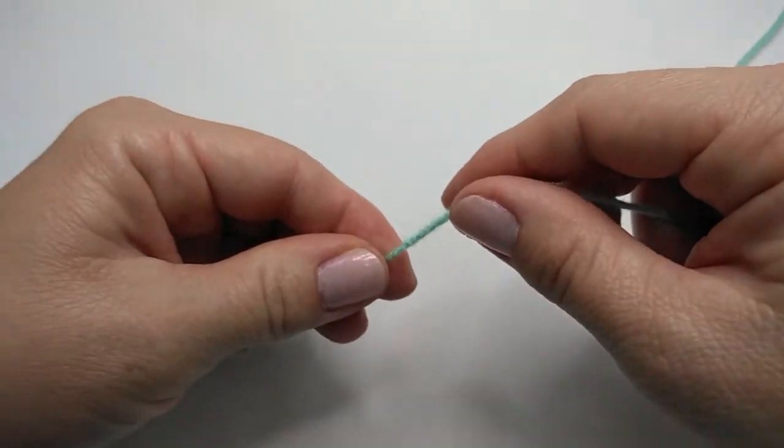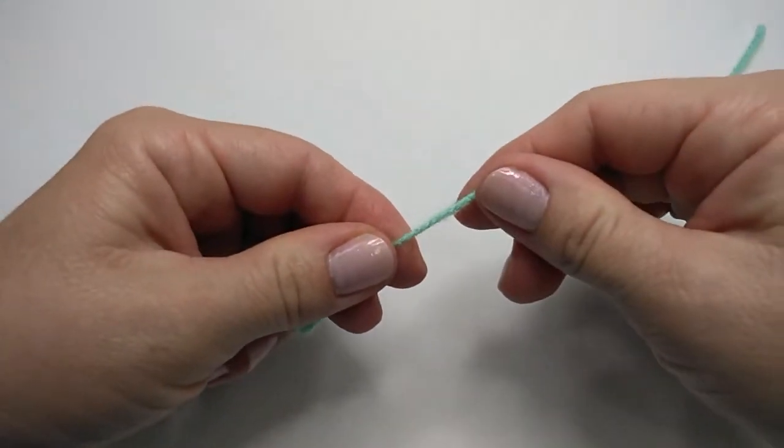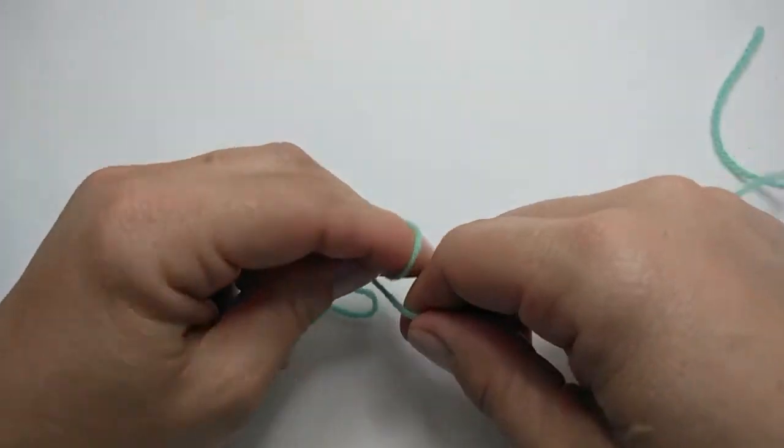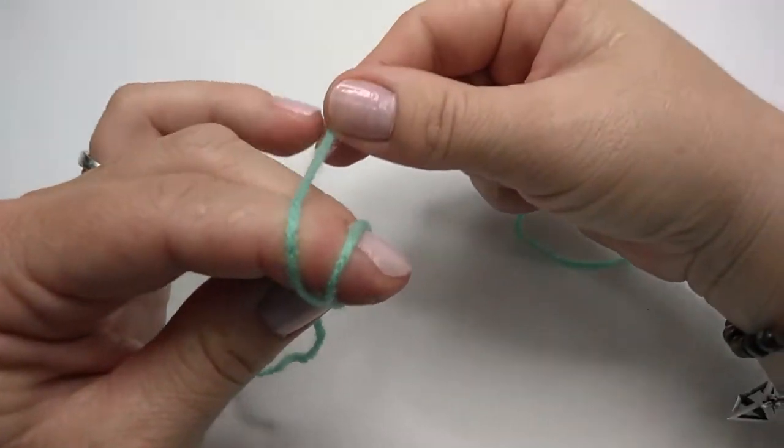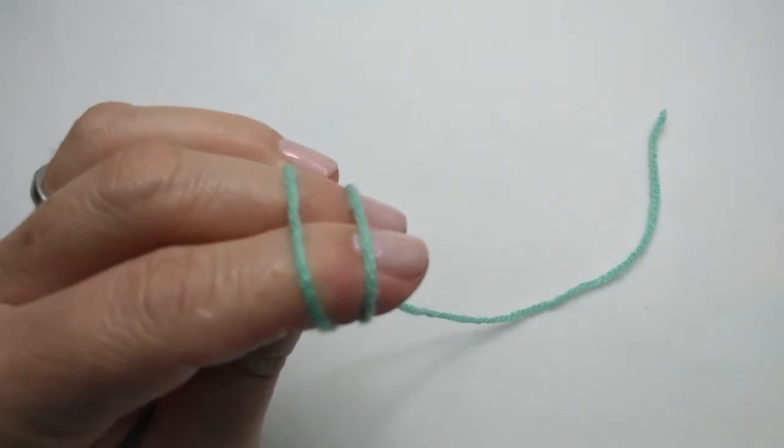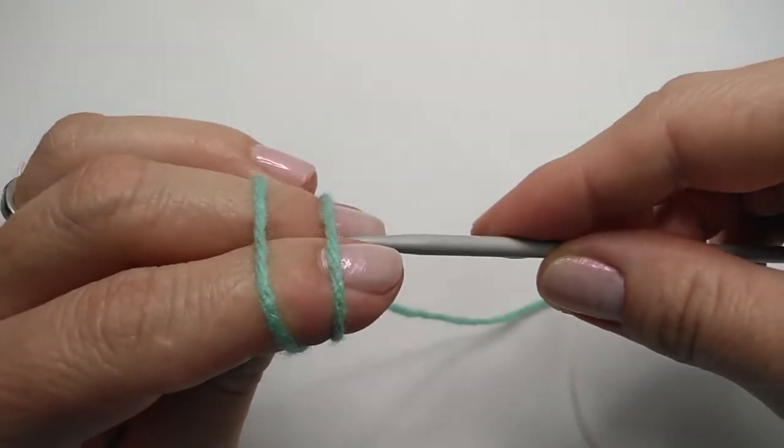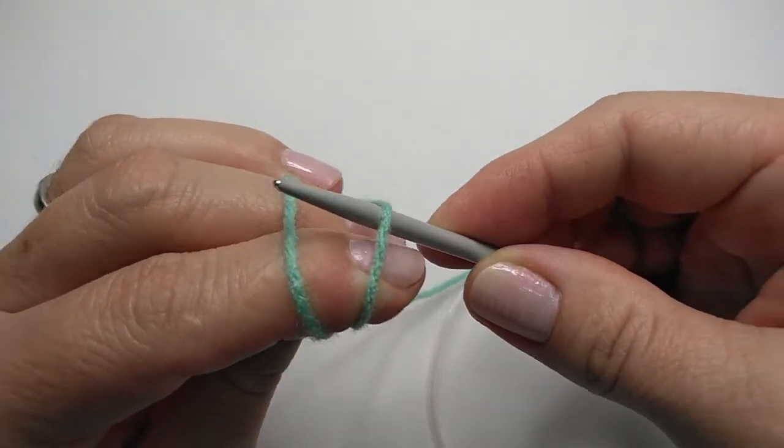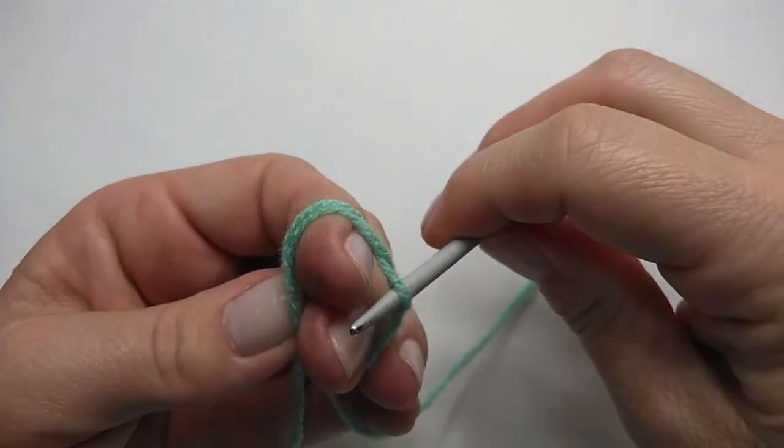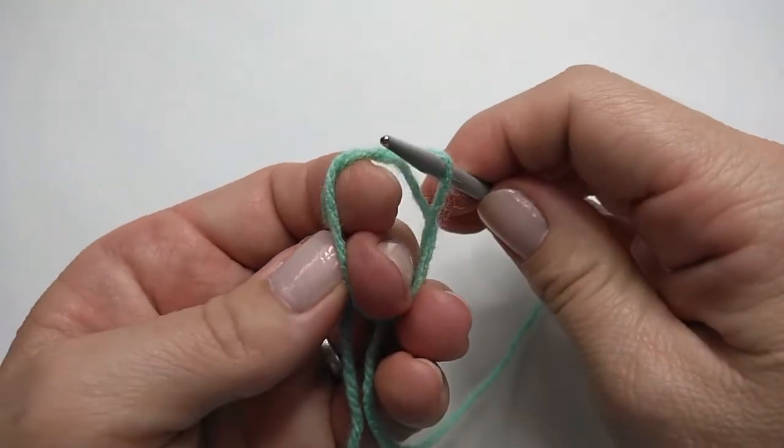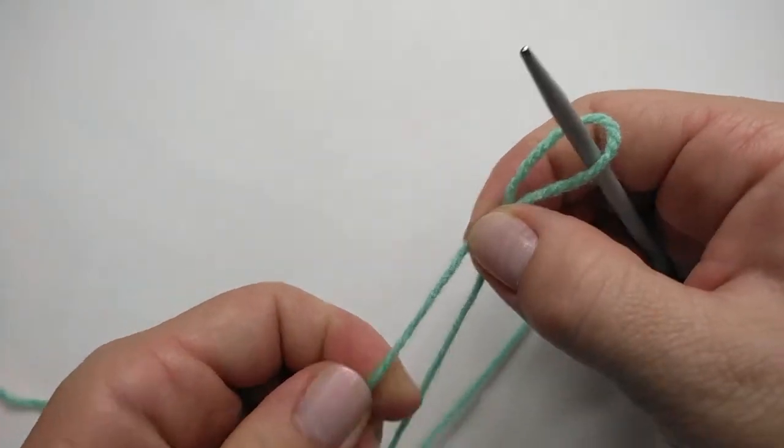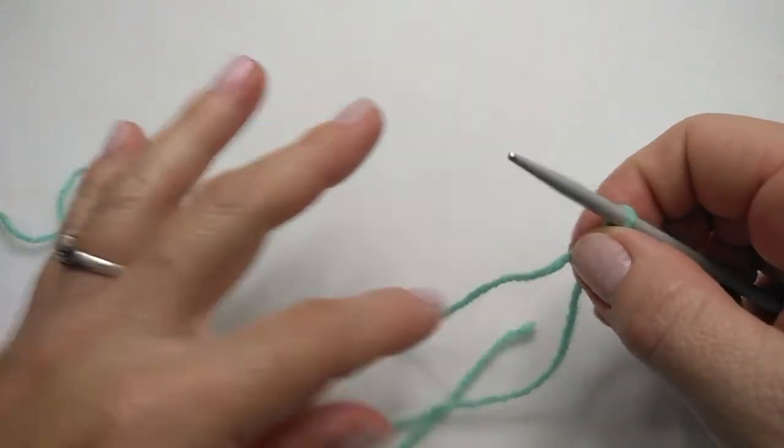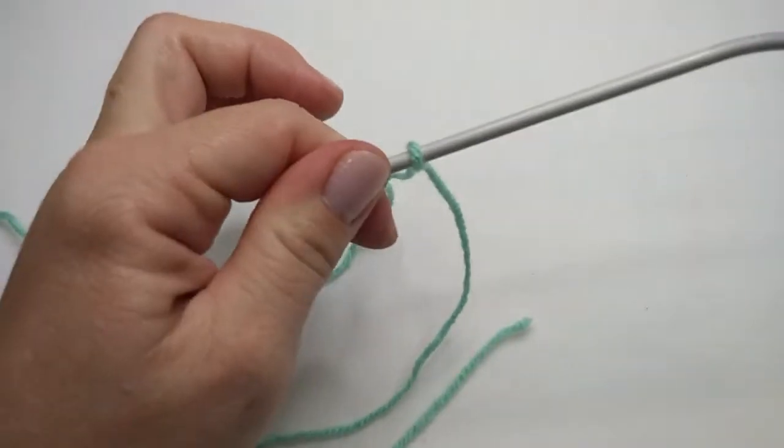I like to always take about five centimeters more and then I make my slip knot. So I take my yarn, I put it around my two fingers crossing the yarn, I take my needle, put it underneath the first strand and just grab the second strand off the fingers and pull it closed and that is my slip knot.